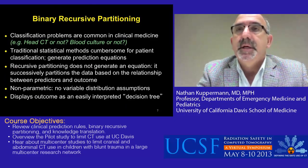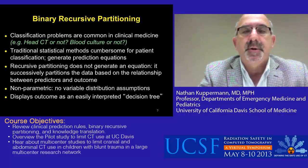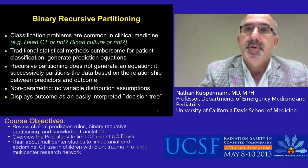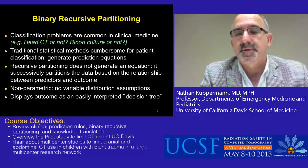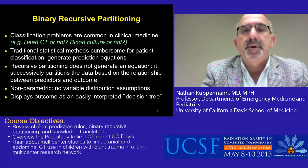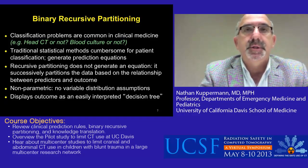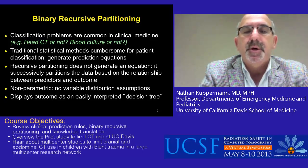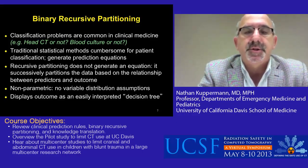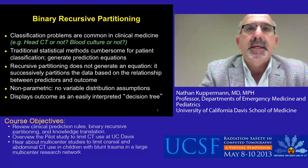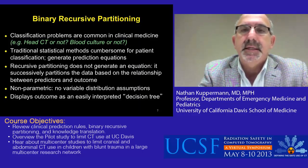The statistical technique we typically use to create these decision rules is binary recursive partitioning. Classification problems are very common in clinical medicine and are typically binary — for example, do you get a head CT or not? Do you obtain a blood culture or not? Traditional statistical methods are cumbersome for patient classification and generate prediction equations that are complicated to use in practice. Recursive partitioning doesn't generate an equation — it successively partitions the data based on the relationship between the predictors and your outcome. It's nonparametric, so no variable distribution assumptions are made, and it displays the outcome as an easily interpreted decision tree.